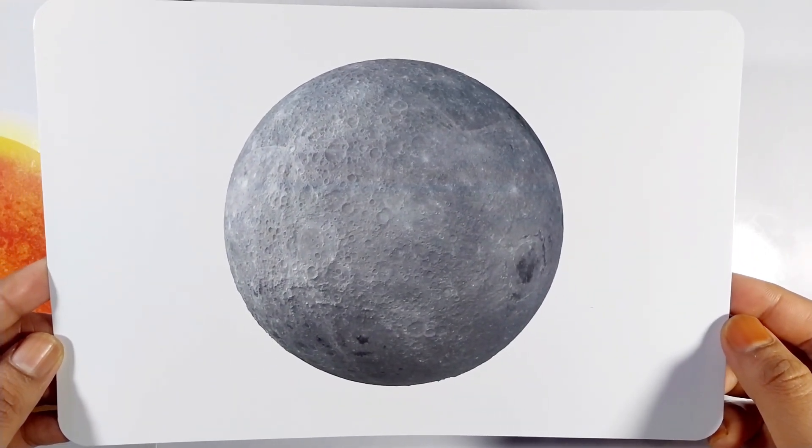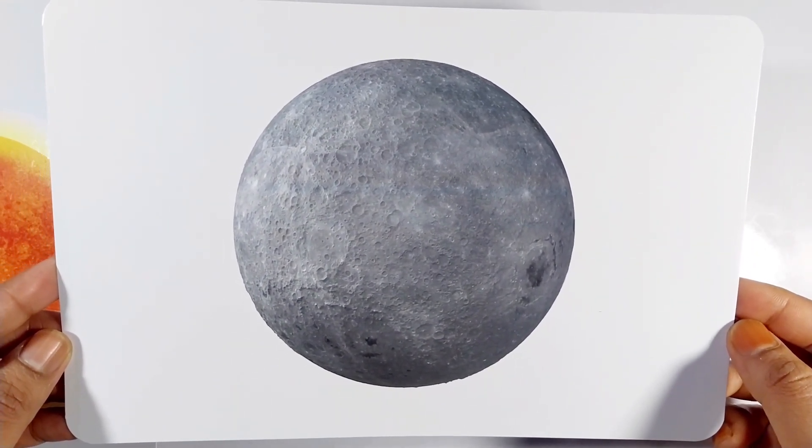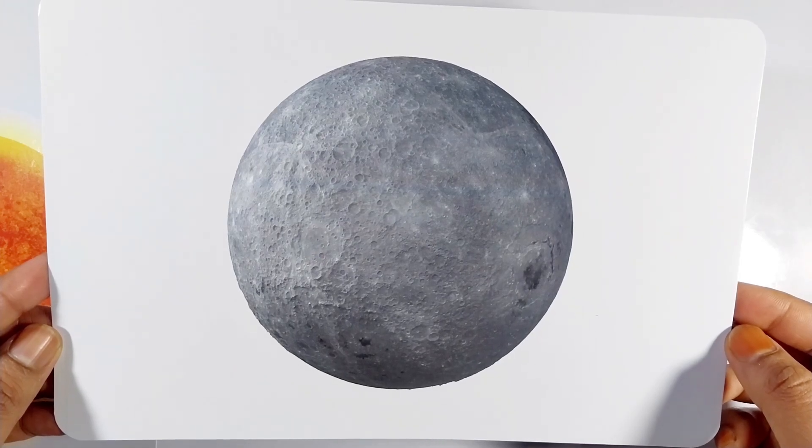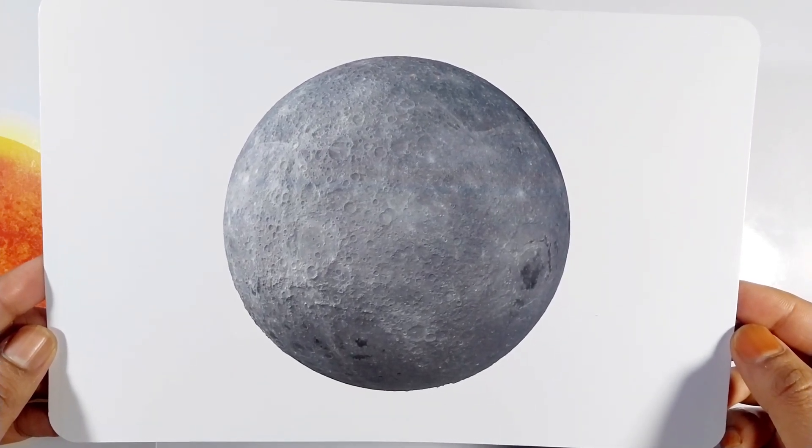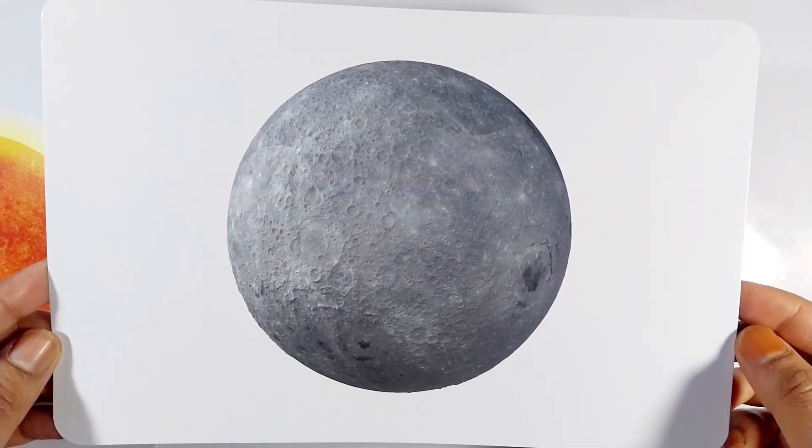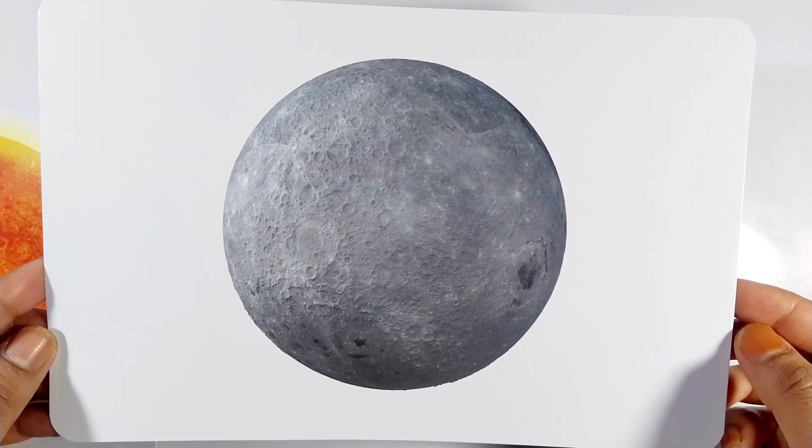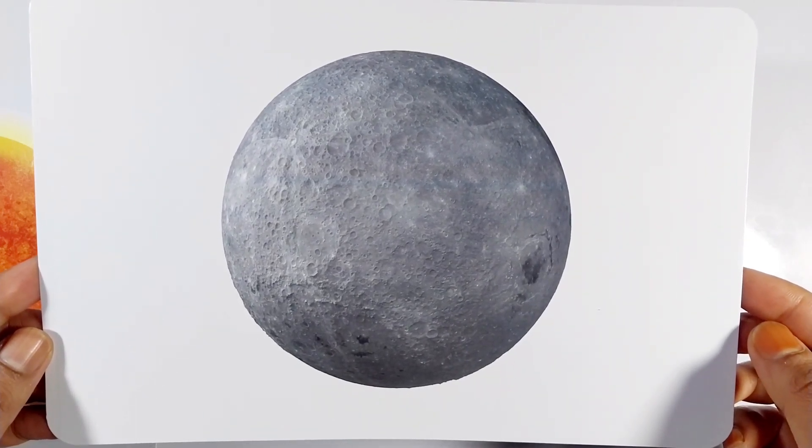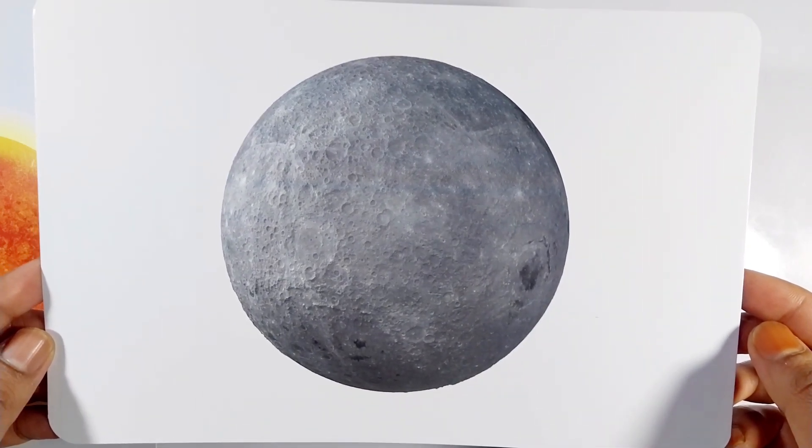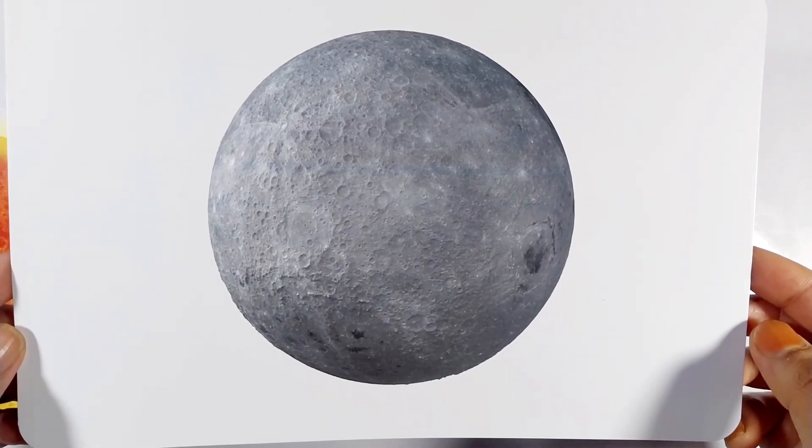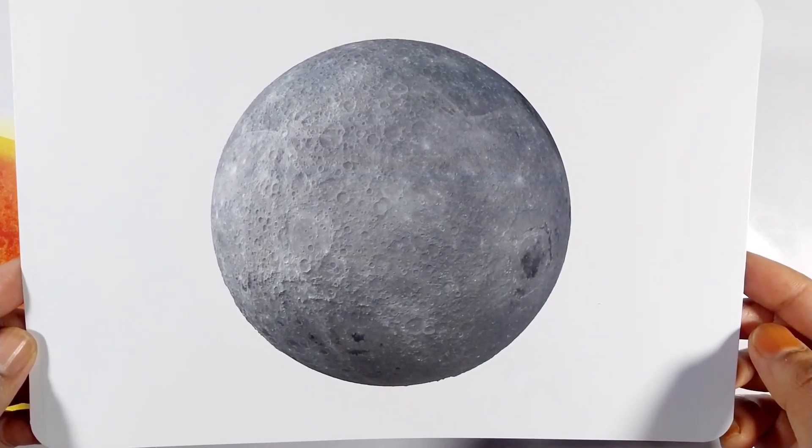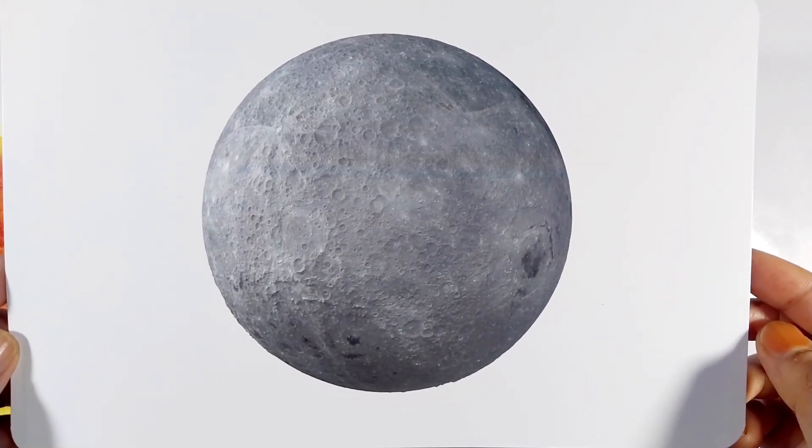Mercury is the smallest planet in our solar system. It is very close to the sun and has extreme temperatures. Mercury has no atmosphere, making it very hot during the day and very cold at night.